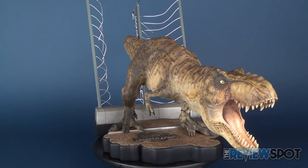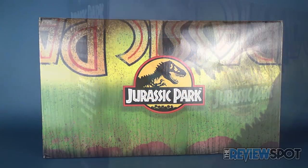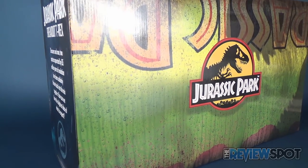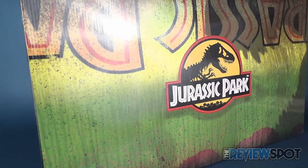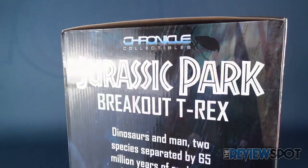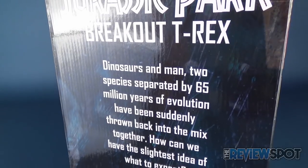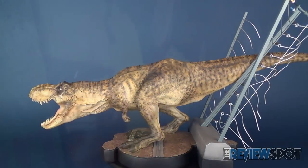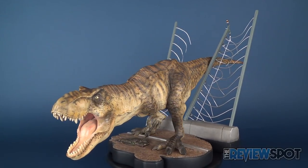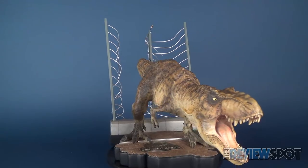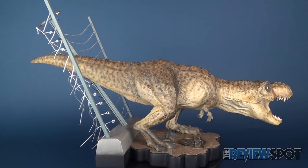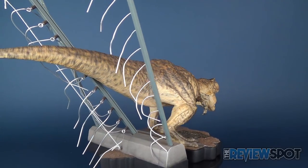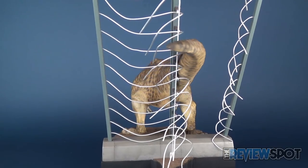Today we're going to be checking out the Chronicle Collectibles Jurassic Park Breakout T-Rex Statue. This 1:20th scale statue features the female T-Rex as she roars in triumph after setting herself free from her pen. The statue stands at a whopping 24 inches long with a 16 inch long tail and 12 inches wide.